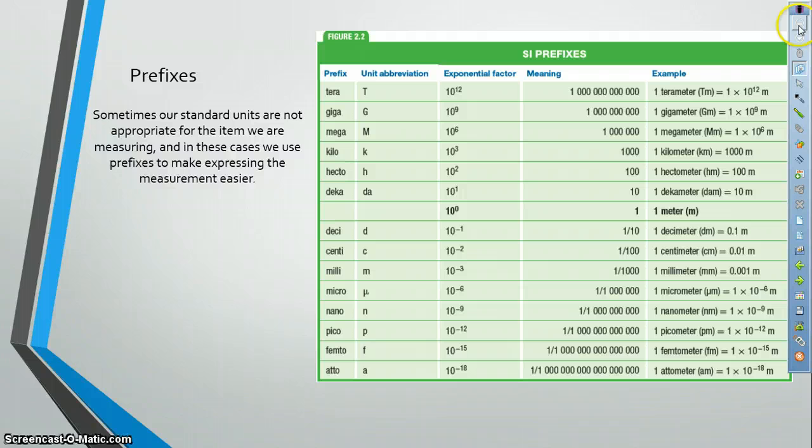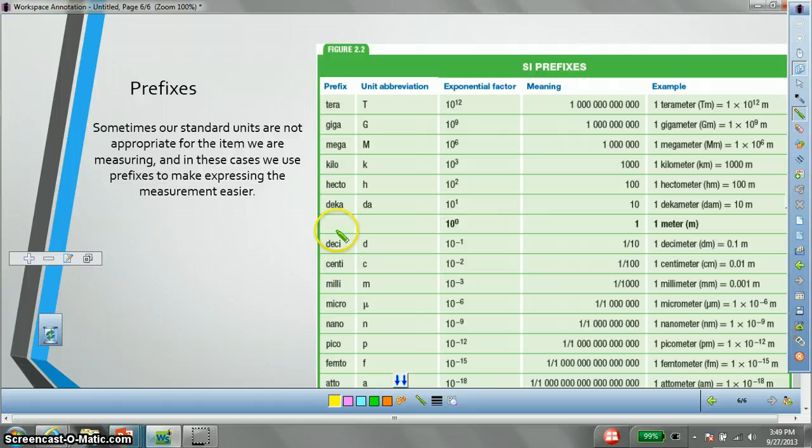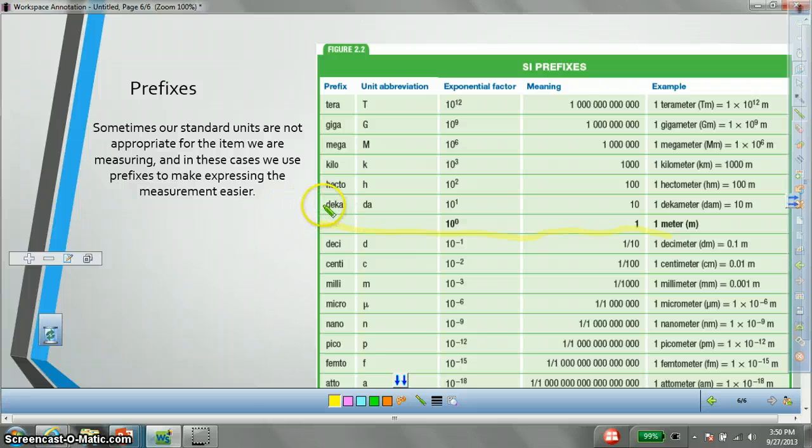We start with our unit measurement, one of something, one meter, one second, one gram. That's this row right here, our one, one meter. As we go up, we increase our units by powers of ten. So, the first power of ten, ten to the first, is deca. When you say you have a deca something, it means you have ten of that thing. You have multiplied it by ten. Next is hecto. Hecto means you have multiplied that thing by a hundred. There are a hundred of it. One hecto meter is one hundred meters. Next is kilo. Kilo means you have a thousand of something. A kilometer, a kilosecond. Then we skip a few powers of ten, and we go to mega, which is ten to the sixth power. Giga, which is ten to the ninth power. And terra, which is ten to the twelfth power.